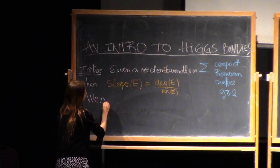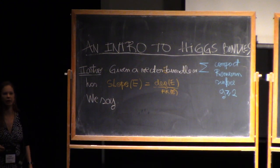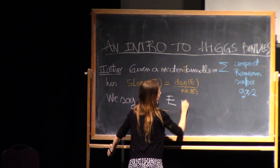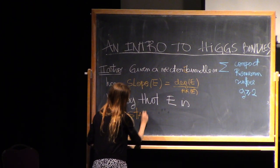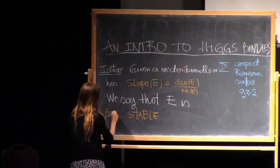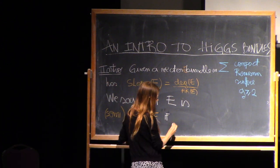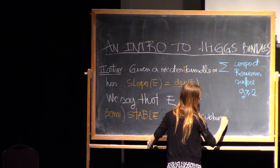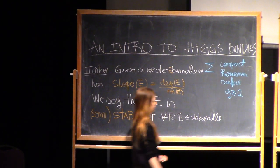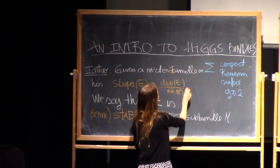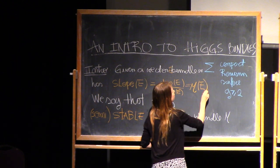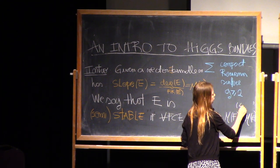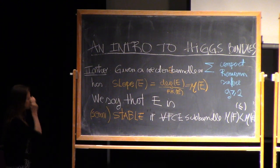We're going to say that a vector bundle is stable or semi-stable depending on the slope of its sub-bundles. We say that E is stable — or equivalently semi-stable — if for every sub-bundle F inside E, the slope of F is less than the slope of E. I'm going to call the slope mu of E, so mu of F is less than mu of E for stability. For semi-stability, we want less than or equal.